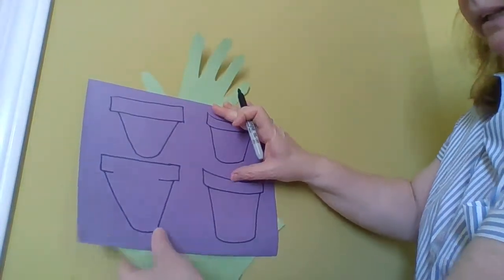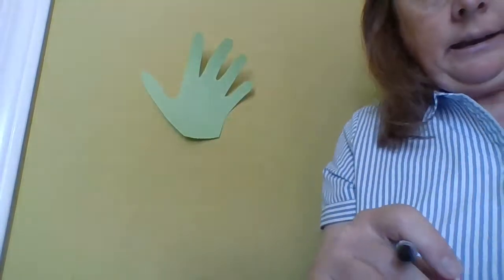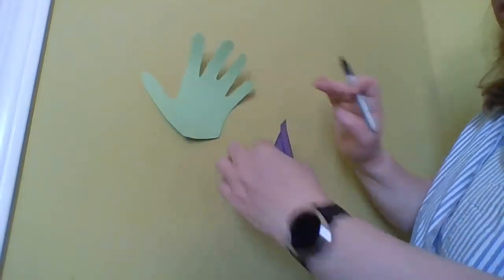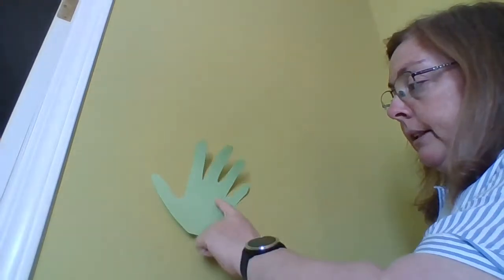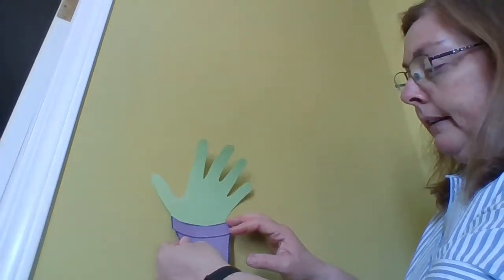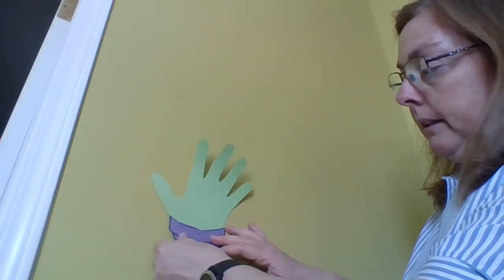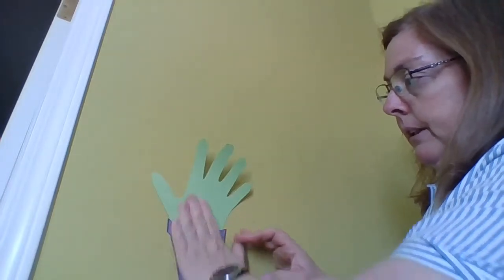Now I have my hand and I have my pot. When you do this, you're going to glue it into, or I'm using tape, but you guys can use your glue and you can glue it into your religion journal. So you glue your hand first and then you figure out where you want your pot to go and then you glue your pot down.